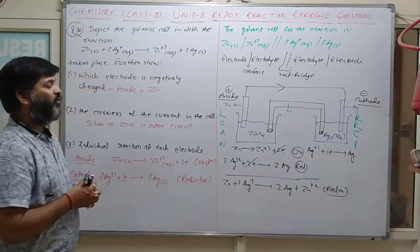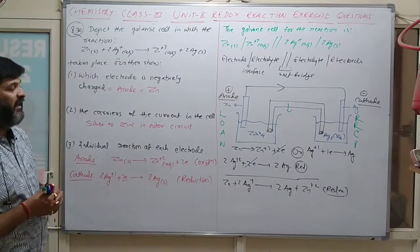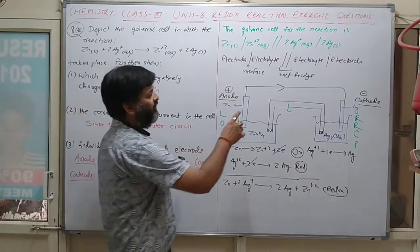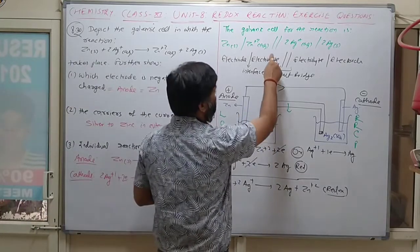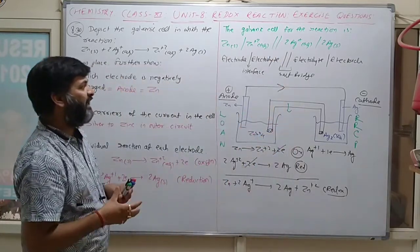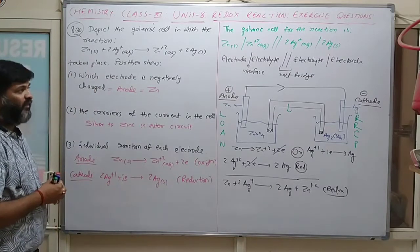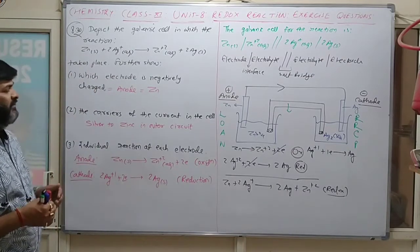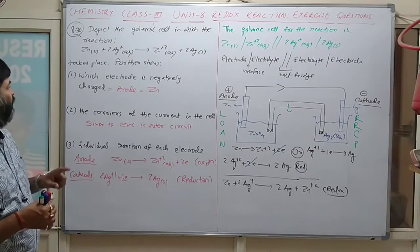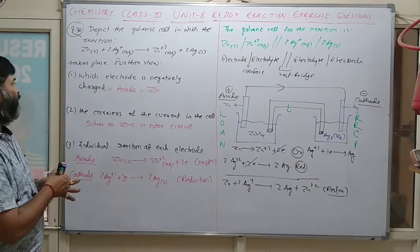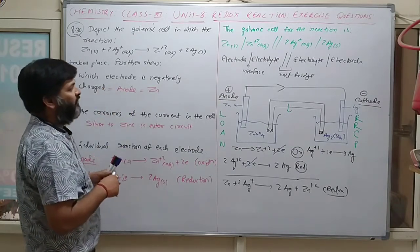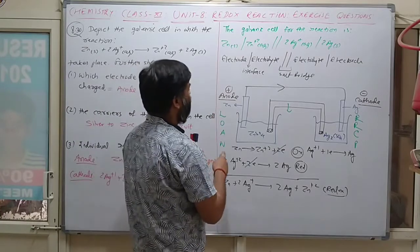The salt bridge is represented by a double line, and a single line represents the interface — the layer between two different types of medium. The salt bridge contains ammonium nitrate or potassium nitrate.